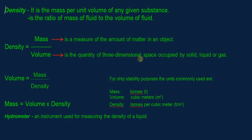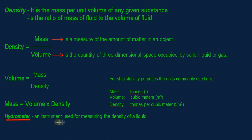Volume is the quantity of three-dimensional space occupied by a solid, liquid or gas. Three-dimensional refers to the length, the breadth and the depth. If volume is required, volume equals mass over density. If mass is required, mass equals volume times density. For ship stability, units commonly used are tons for mass, cubic meters for volume, and tons per cubic meter for density. On board, we use a hydrometer to measure the density of a liquid.